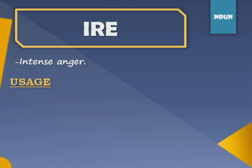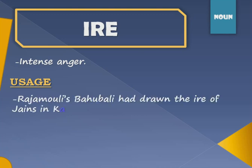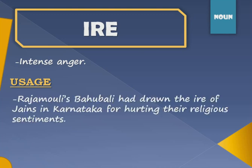The first example is: Raja Molli's Bahubali had drawn the ire of Jains in Karnataka for hurting their religious sentiments. This means Raja Molli's movie Bahubali made them very angry because some things in the movie portrayed Jainism incorrectly.